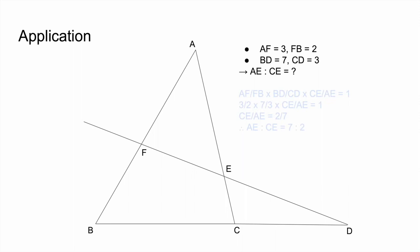All right, so here's the solution. Here's the equation from before: AF over FB times BD over CD times CE over AE equals 1. And now if you just substitute these values into this equation, we get 3 over 2 times 7 over 3 times CE over AE equals 1. And from this, if you calculate it, we get CE over AE equals 2 over 7. And that's just another way of saying that the ratio from AE to CE equals 7 to 2.